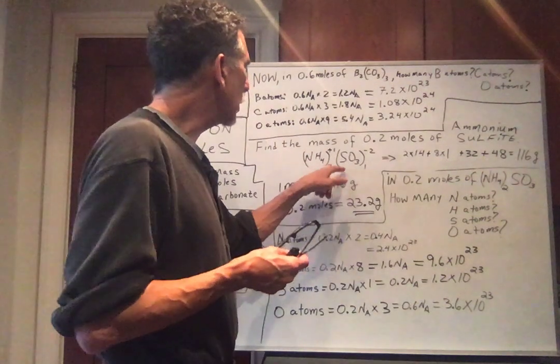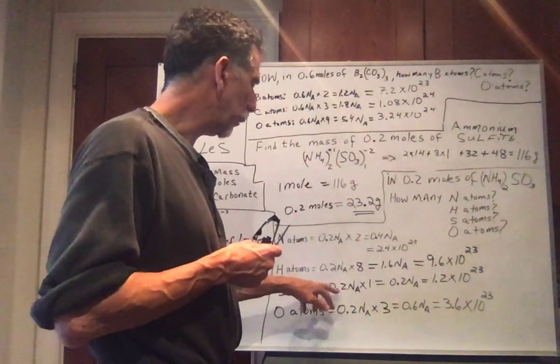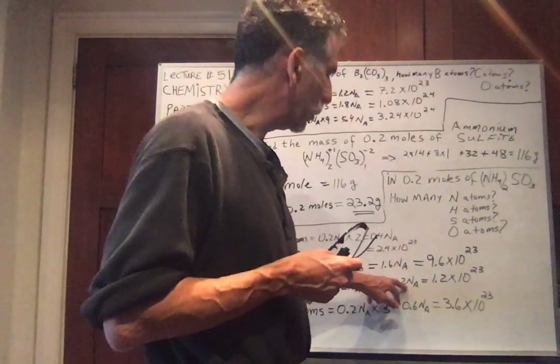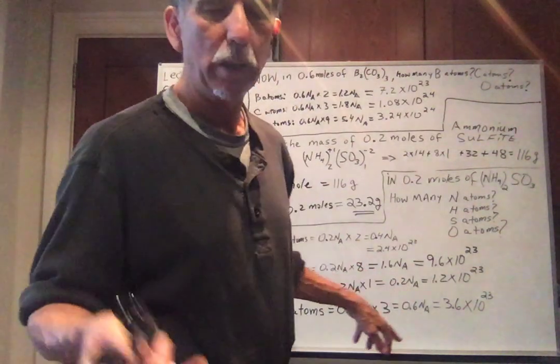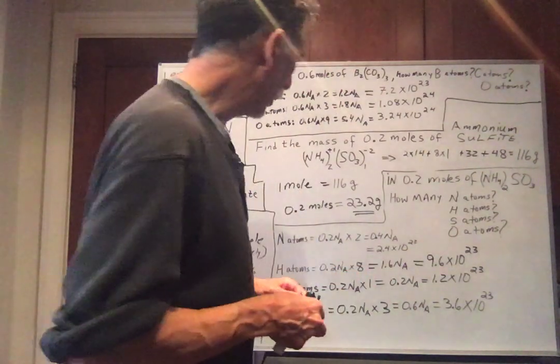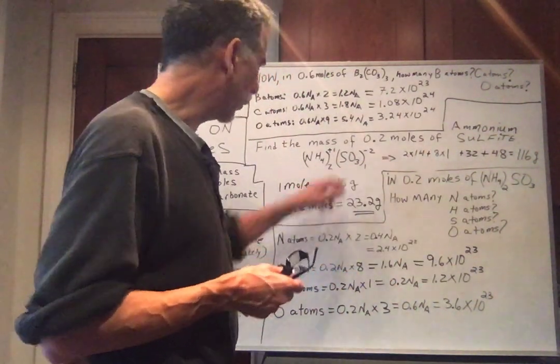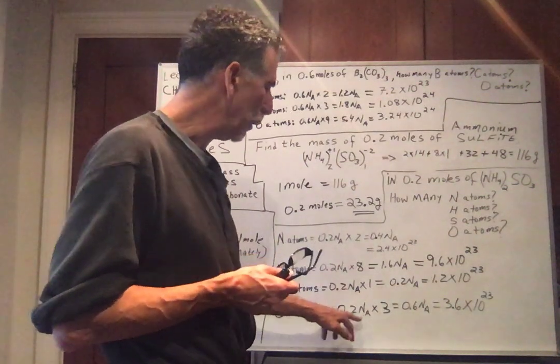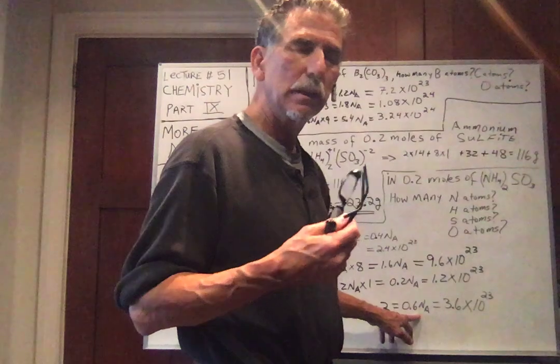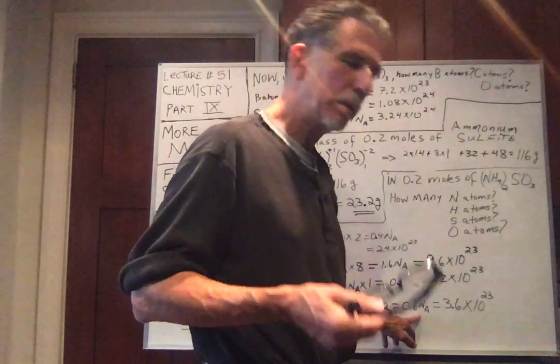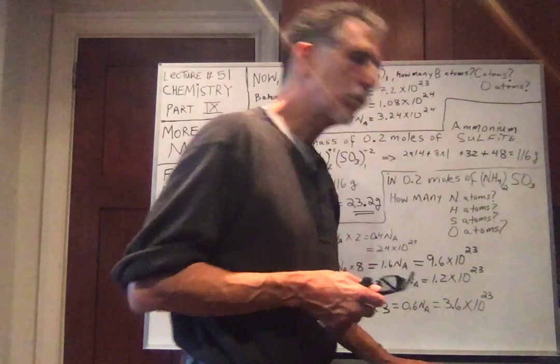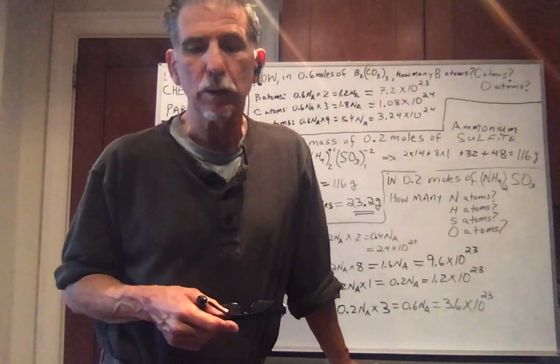S atoms. There's just 1 sulfur atom in this molecule. So we have 0.2 NA times 1, which is just 0.2 NA, which is 0.2 times 6 times 10 to the 23rd, which is 1.2 times 10 to the 23rd. And finally, oxygen atoms. We have 3 oxygen atoms. So 0.2 NA times 3 is 0.6 NA. 0.6 NA is 0.6 times 6 times 10 to the 23rd. And that gives us 3.6 times 10 to the 23rd.